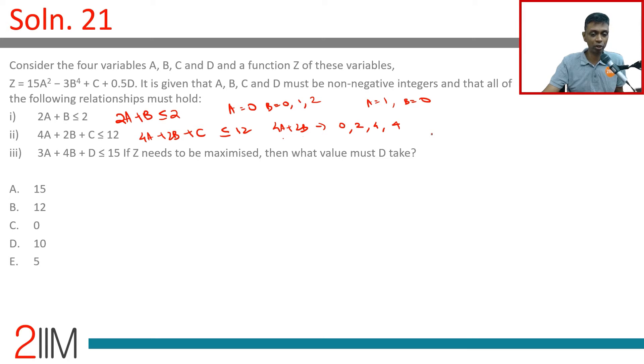4A + 2B is either 0, 2, or 4. In which case C, maximum - we need to maximize C. It could be 12, 10, or 8.